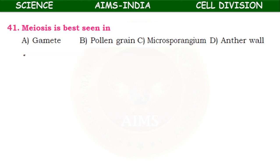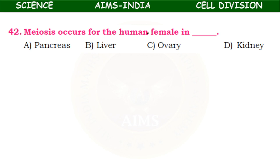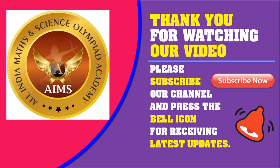Meiosis is best seen in — gametes, pollen grains, microsporangium, or anther wall? The best place to observe meiosis is microsporangium — the pollen grain producing chamber. Meiosis occurs in the human female in — pancreas, liver, ovary, or kidney? Since the reproductive organ is ovary, meiosis occurs in the ovary. I hope you followed the video. Thank you for watching. Please subscribe to our channel and press the bell icon for latest updates.